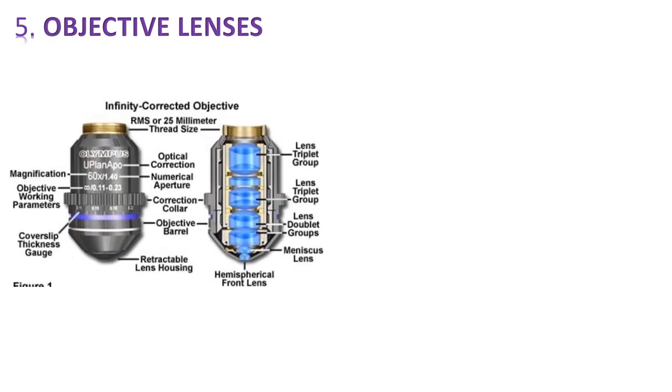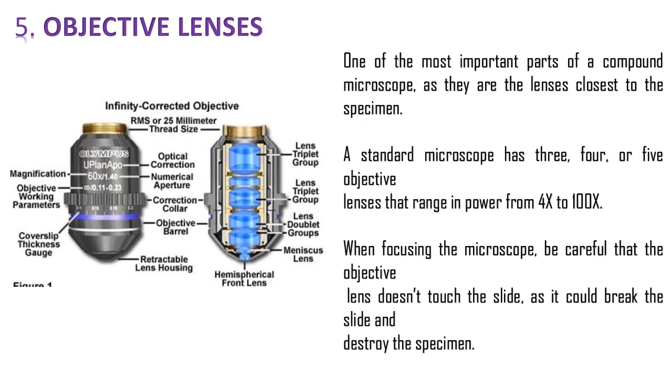Then the fifth one is objective lenses. It is the lens system which is closest to the specimen. And it is standard. In standard microscope it has 3, 4 or 5 objective lenses in that system, which ranges from 4x to 100x. Generally 4x, 10x, 40x, 100x magnifications are available as objectives.